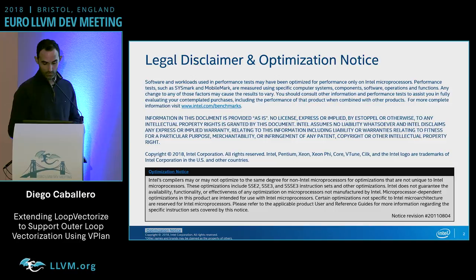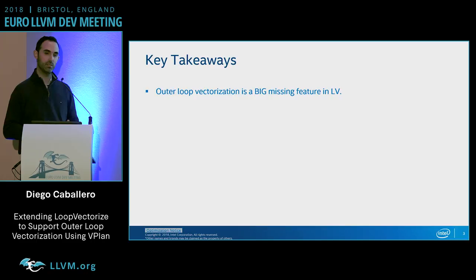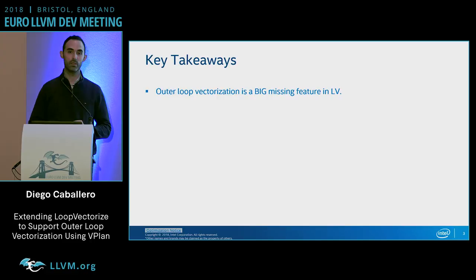The most important thing first: the takeaways. The first takeaway is that out-of-loop vectorization is a big missing feature in loop vectorizer. Out-of-loop vectorization is not even a new technology — it's been there for a while — but we don't have it in loop vectorizer, and this is one of the problems we are trying to address with the vPlan project.